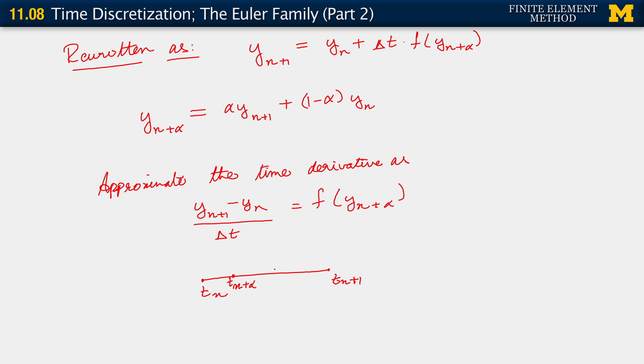By choosing different values of alpha, including alpha equals 0, or alpha equals 1, or really anything else, we get particular properties for our method. So this is where the approximation of the time derivative comes in. We have this side of it, which is the linear approximation. And here we're approximating the ODE by evaluating the right-hand side at some t_n+alpha. So this is the basis of the Euler method, and we are going to apply it to our time discretized ODE when we return in the next segment.